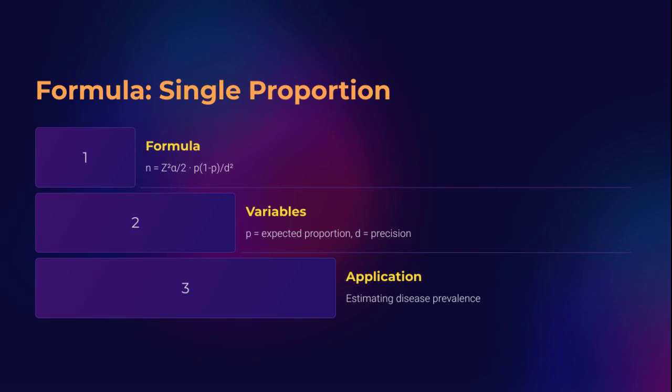This formula helps you estimate how common something is — for instance, what proportion of people have hypertension in a city. You'll need an estimate of the proportion, your desired precision, and confidence level. The tighter your desired interval, or the closer the proportion is to 0.5, the bigger your sample will need to be. This is a go-to for public health surveillance and community-based screening programs. But beware — incorrect assumptions about prevalence can either underpower or unnecessarily inflate your sample.